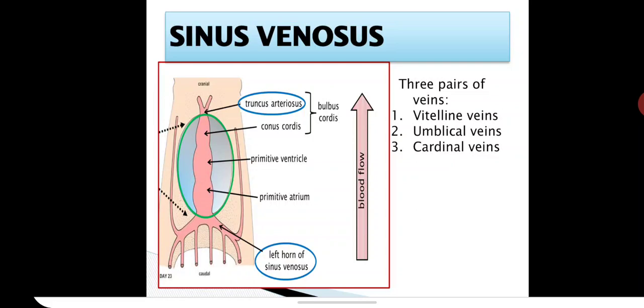To start with the development of the portal vein, there are three pairs of veins during embryonic development. Vitelline veins carry the moderately oxygenated blood from the yolk sac. Umbilical veins carry the oxygenated blood from the placenta. Cardinal veins carry the blood from the body wall. Vitelline veins and umbilical veins are called visceral veins, and cardinal veins are called somatic veins. The visceral veins open in the floor of the sinus venosus, and the cardinal veins open in the horn of the sinus venosus.